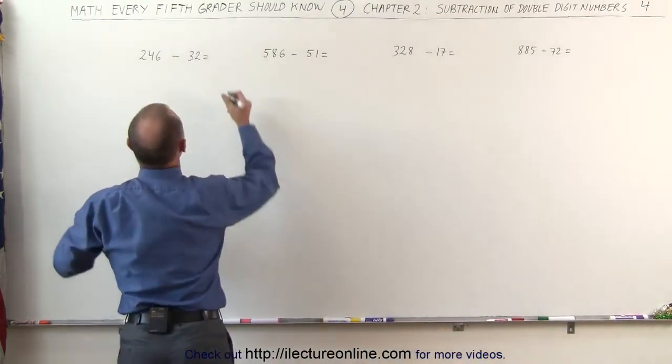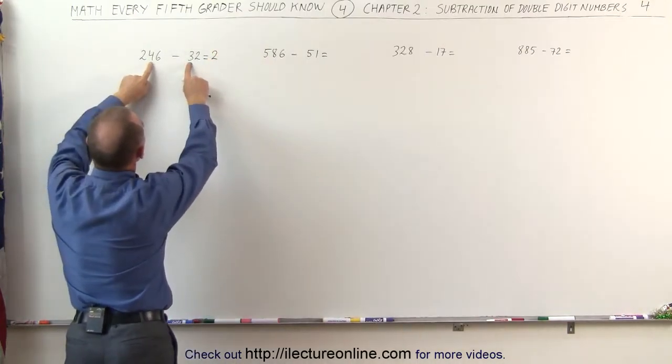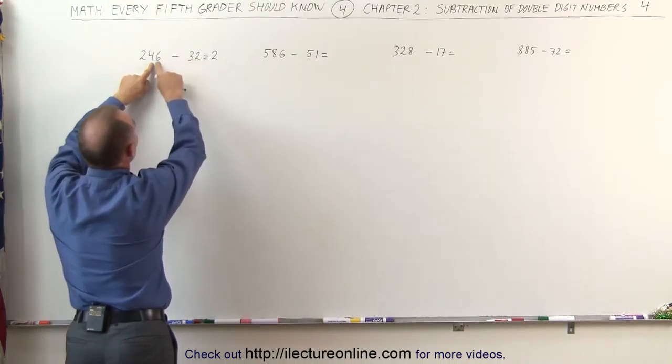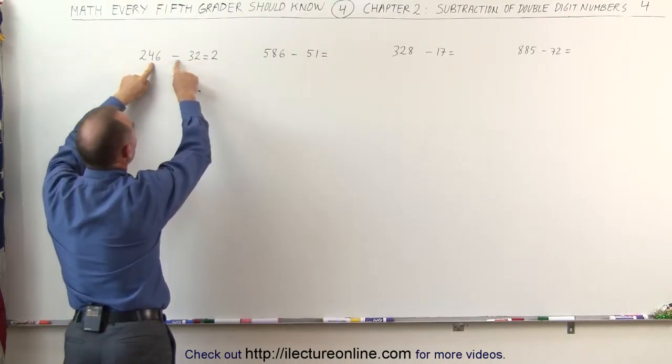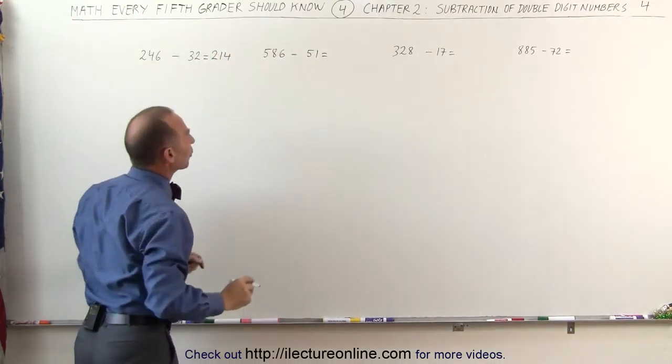So in this case, this will become 200 and some remainder right here. Then we'll look at these two digits right here. 3 is smaller than 4, and 2 is smaller than 6. So we simply have to subtract 3 from 4, that gives us a 1, and 2 from 6, that gives us a 4. The answer is 214.